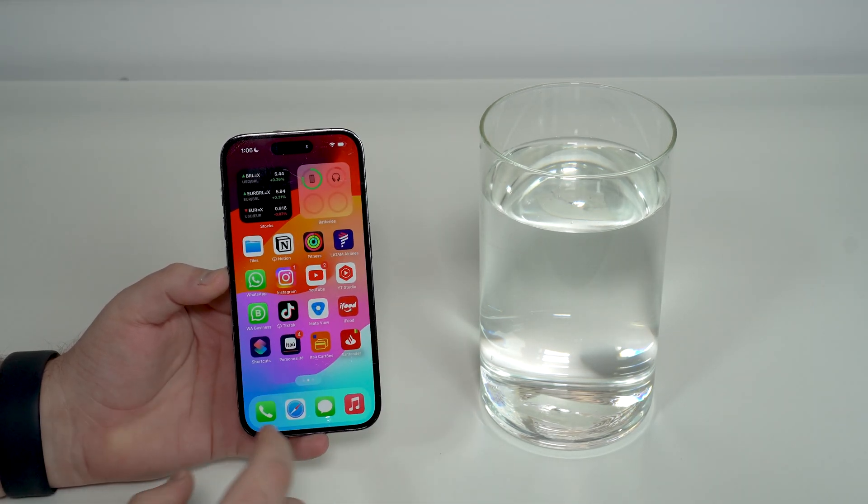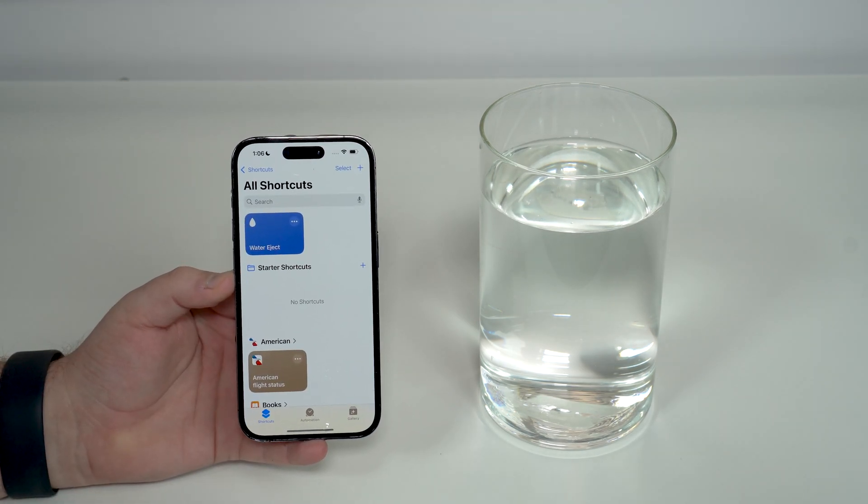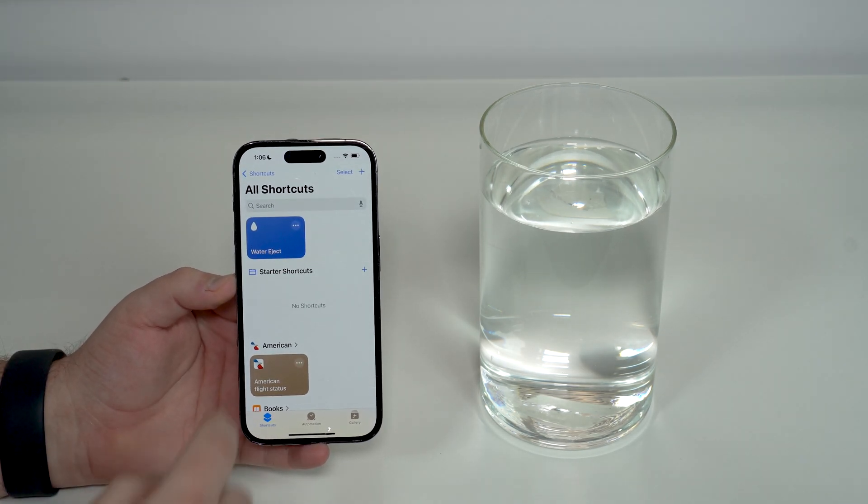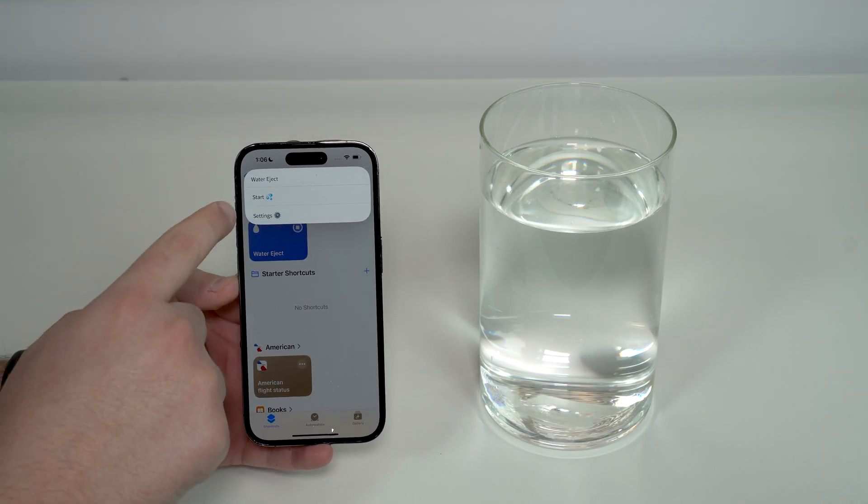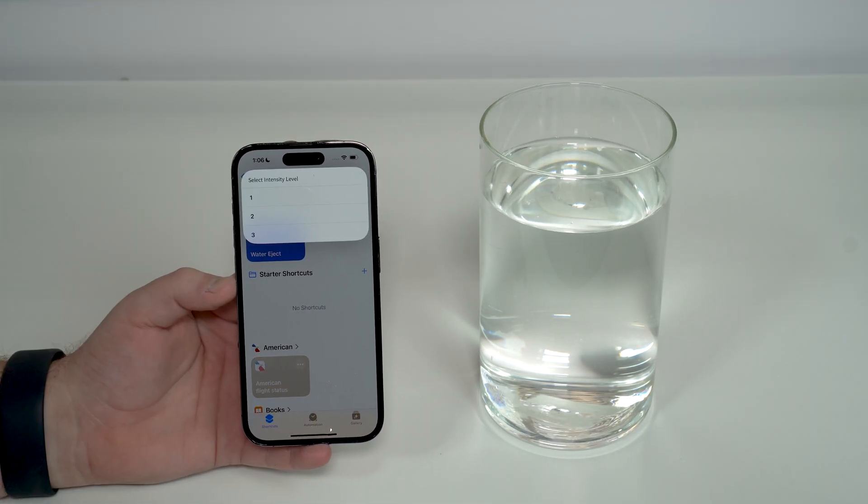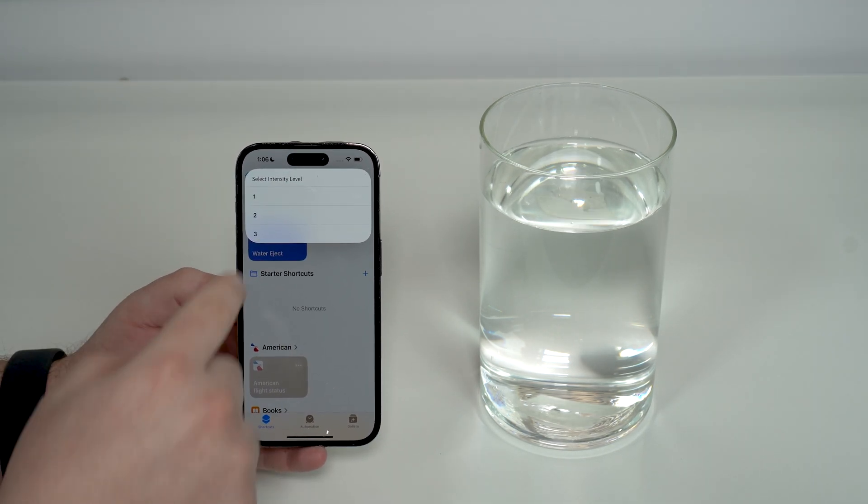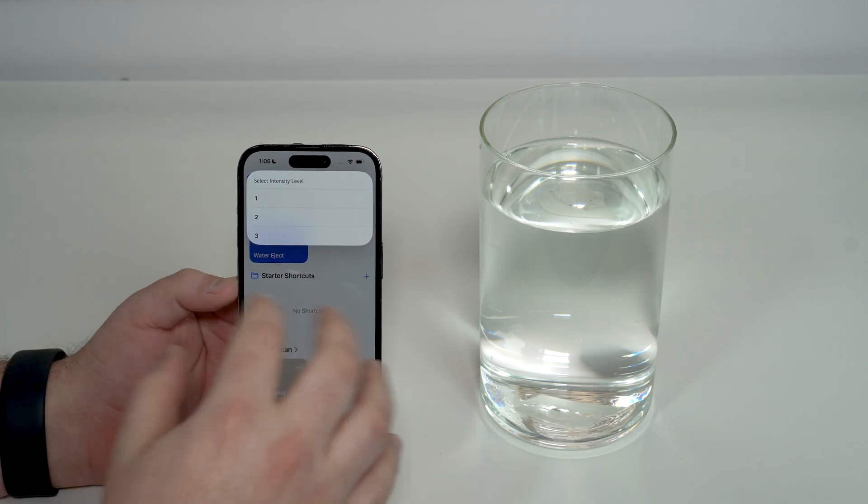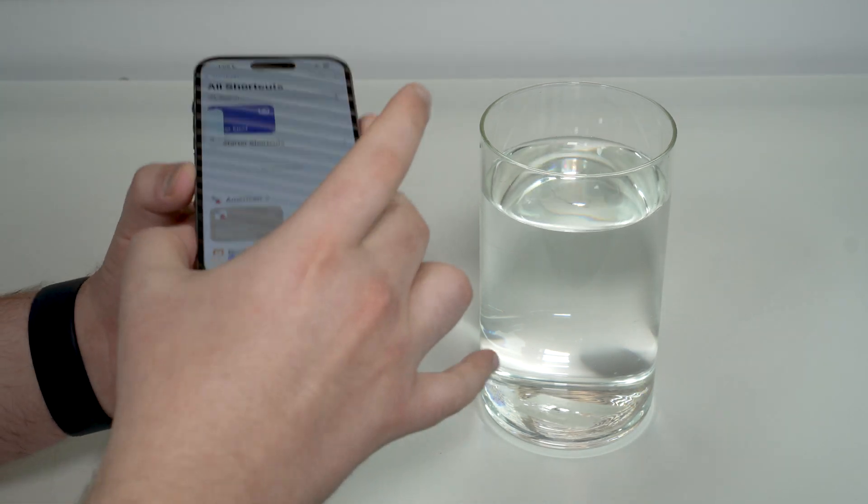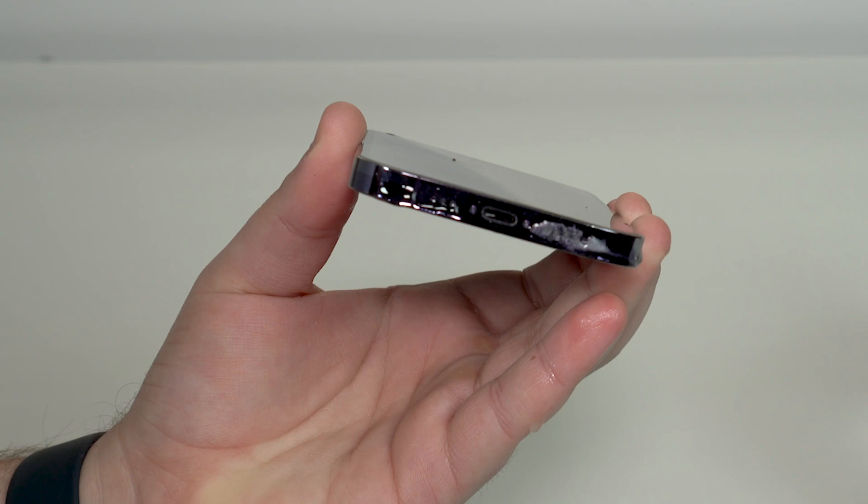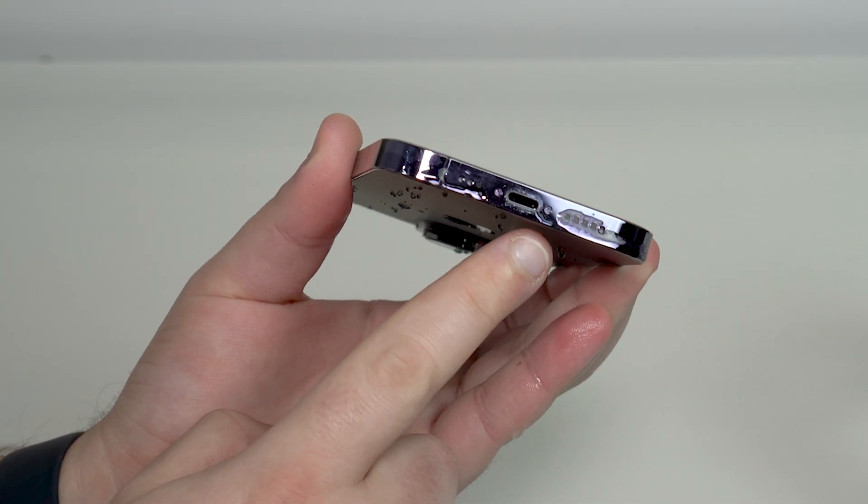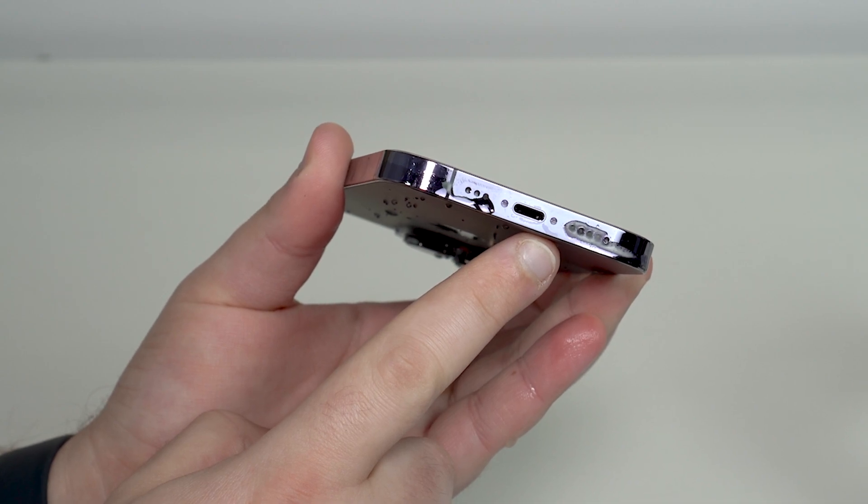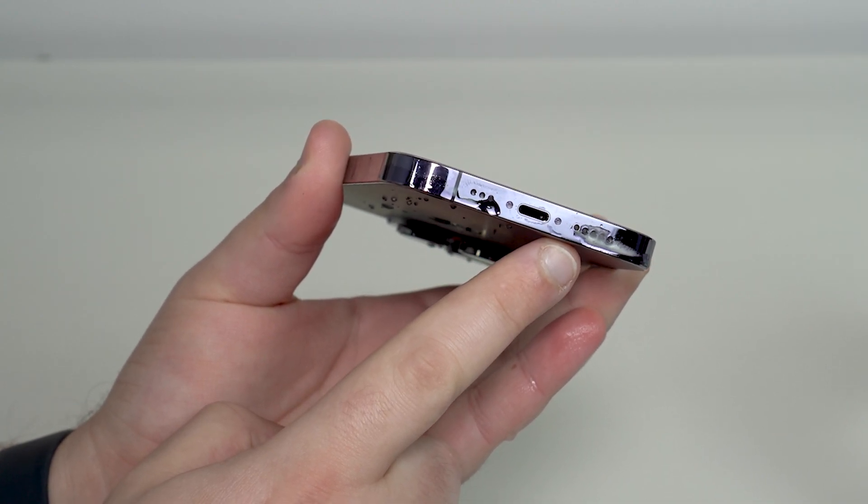Alright, now let's go ahead and test it out. Let's open up the shortcuts app. First we're gonna try method number one. Tap on Water Eject, as you can see, and then the automation will start. Tap on start and then the intensity level, tap on three. Go ahead for the maximum. Alright, so tap on it.